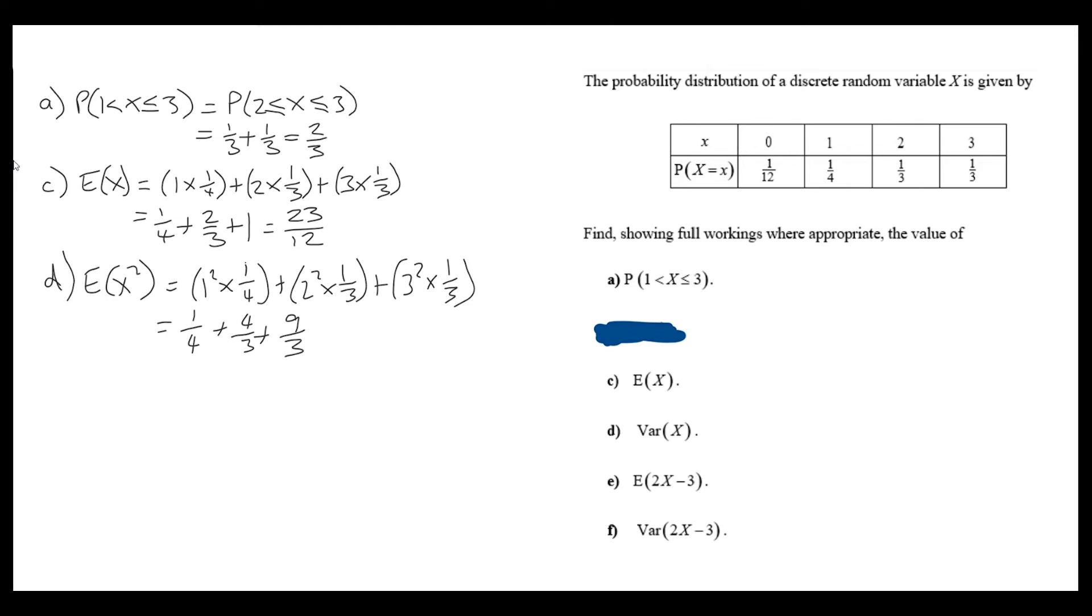Some students think that this is the end of the question, because there's a similar endpoint to the previous part, but we need to combine these two together with the variance formula. Variance formula says that the variance of any discrete random variable is the expectation of x squared minus the expectation of x squared. Substituting these values in, we get 131 over 144.